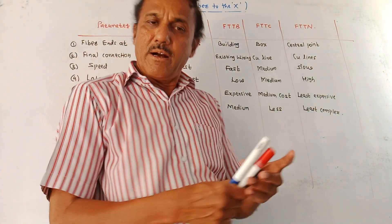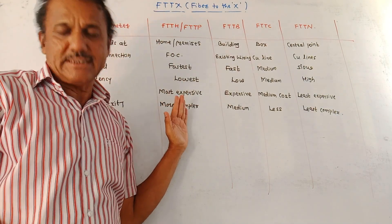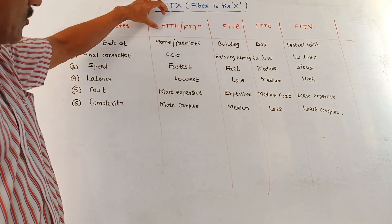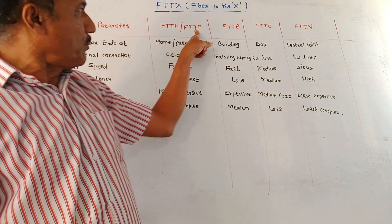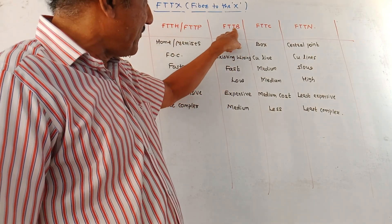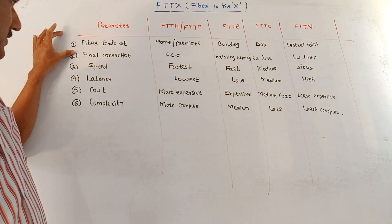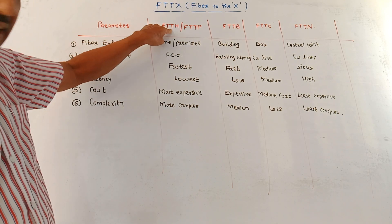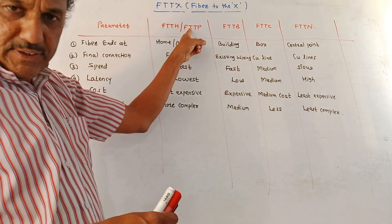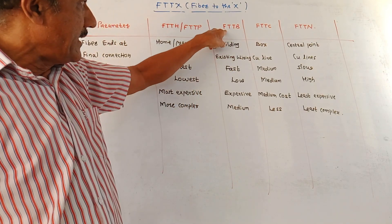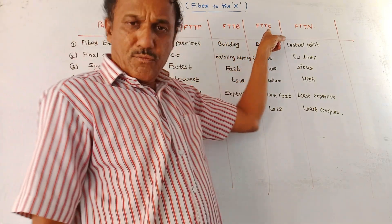Now a comparison between different categories of FTTX. The categories compared are FTTH or FTTP (fiber to home or premises), FTTB (fiber to building), FTTC (fiber to cabinet), and FTTN (fiber to node). For the parameter 'fiber ends at': in FTTH or FTTP, the fiber end connection is at the home or premises; in FTTB, it ends at the building, not at the home.